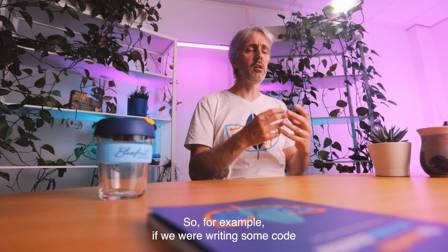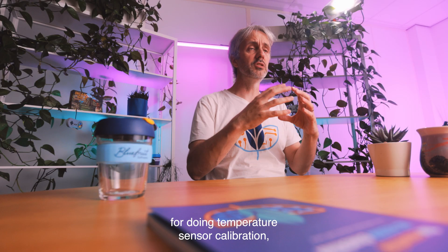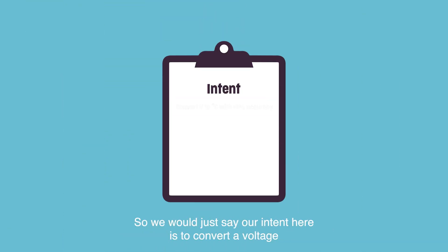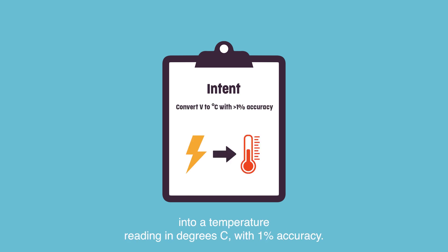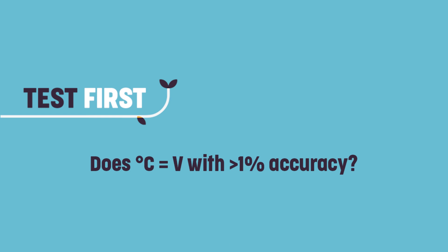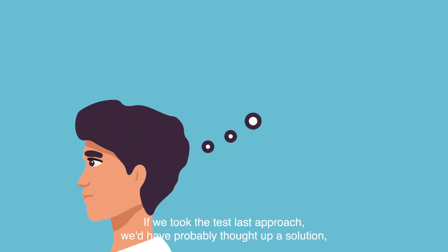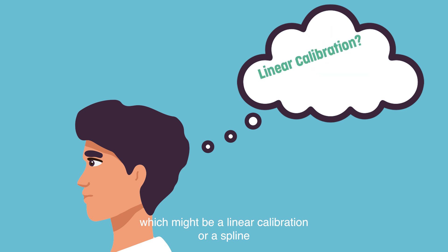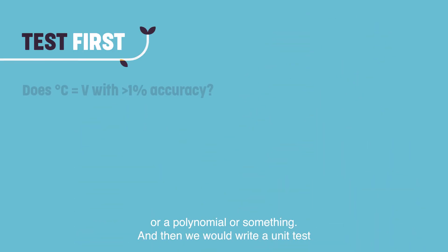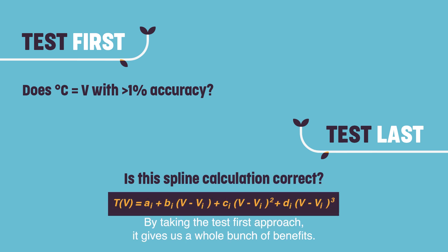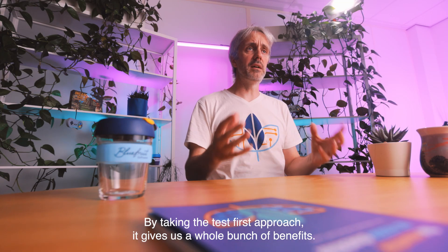For example, if we were writing code for temperature sensor calibration, the test-first approach would mean we wouldn't think about the implementation first. We would just say our intent is to convert a voltage into a temperature reading in degrees C with 1% accuracy, and write a unit test that expressed that. If we took the test-last approach, we'd have probably thought up a solution — maybe a linear calibration, a spline, or a polynomial — and then written a unit test to check those calculations were correct. By taking the test-first approach, it gives us a whole bunch of benefits.